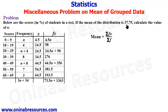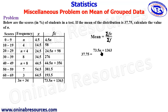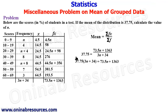Substituting into the mean formula: 37.75 = (73.5n + 1363) / (3n + 34). Cross-multiplying gives: 37.75 × (3n + 34) = 73.5n + 1363. Expanding the left side: 113.25n + 1283.5 = 73.5n + 1363.